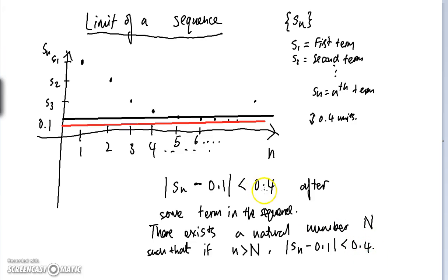But notice 0.4, which was the width of this strip, was a completely arbitrary choice. I could have chosen 0.01 or 0.5 or 0.7 or 0.57, any number. And since the sequence gets closer and closer to 0.1, I can always find this big N, such that if I take terms after the big Nth term, the terms of the sequence always lie within a strip, any number of 0.1.